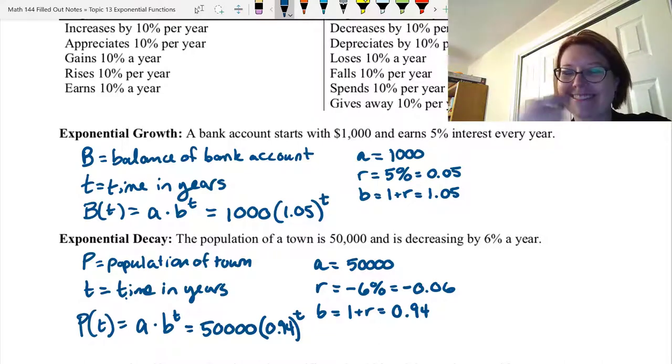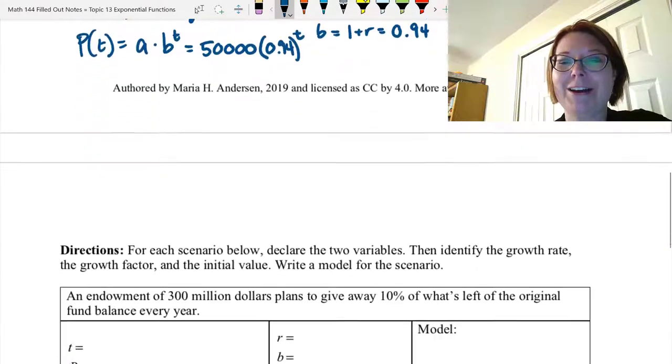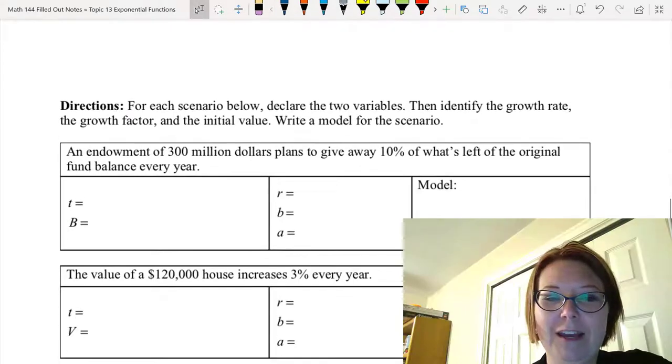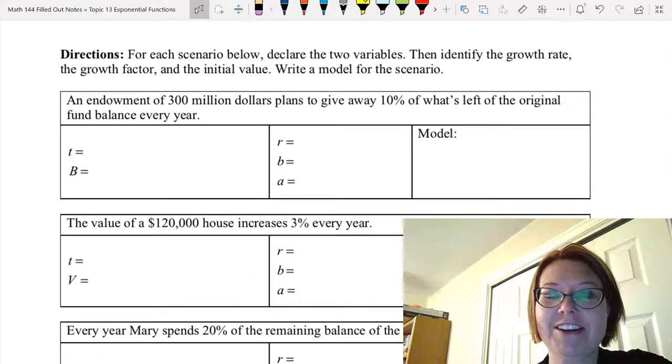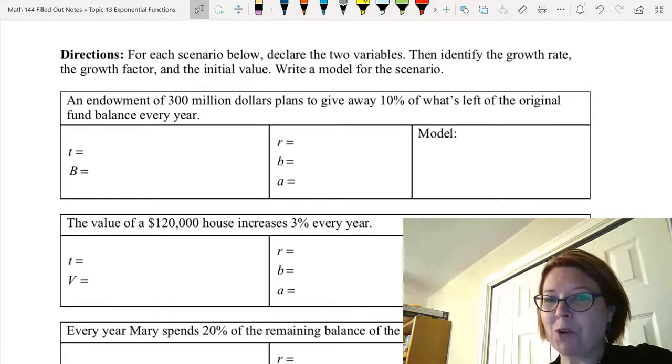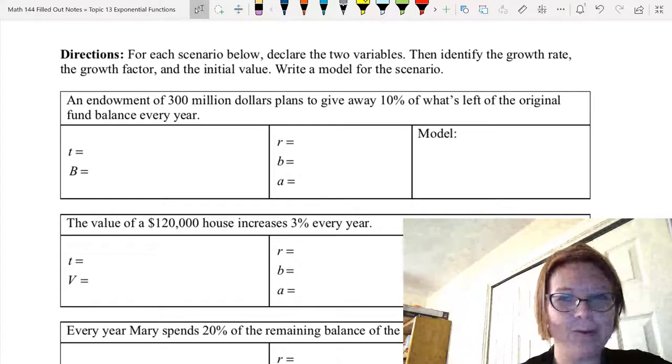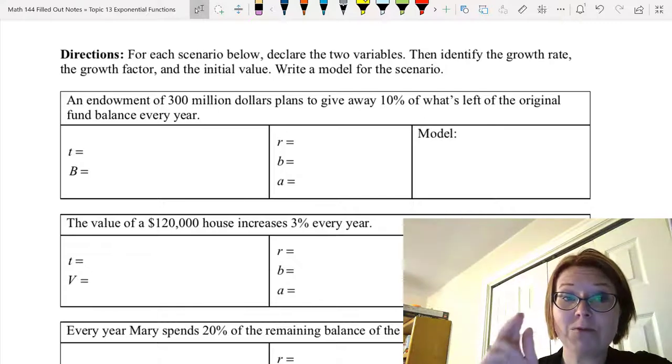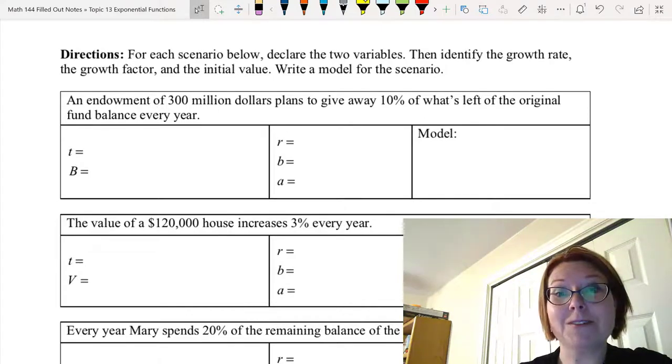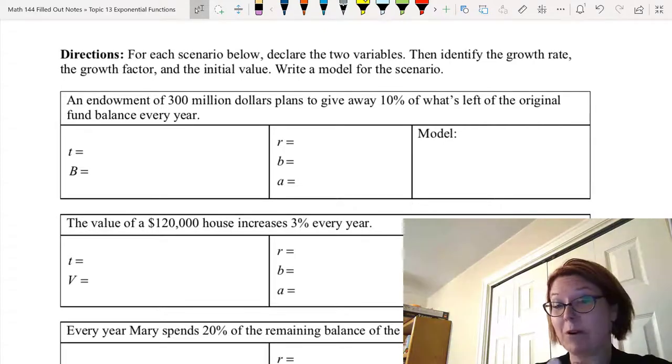Got that? Great, because now it's your turn. I'm giving you four scenarios, and for each scenario, I want you to, surprise, surprise, declare the two variables, then identify the growth rate, the growth factor, and the initial value, and then write a model for the scenario. So pause the video and give these four problems a try.